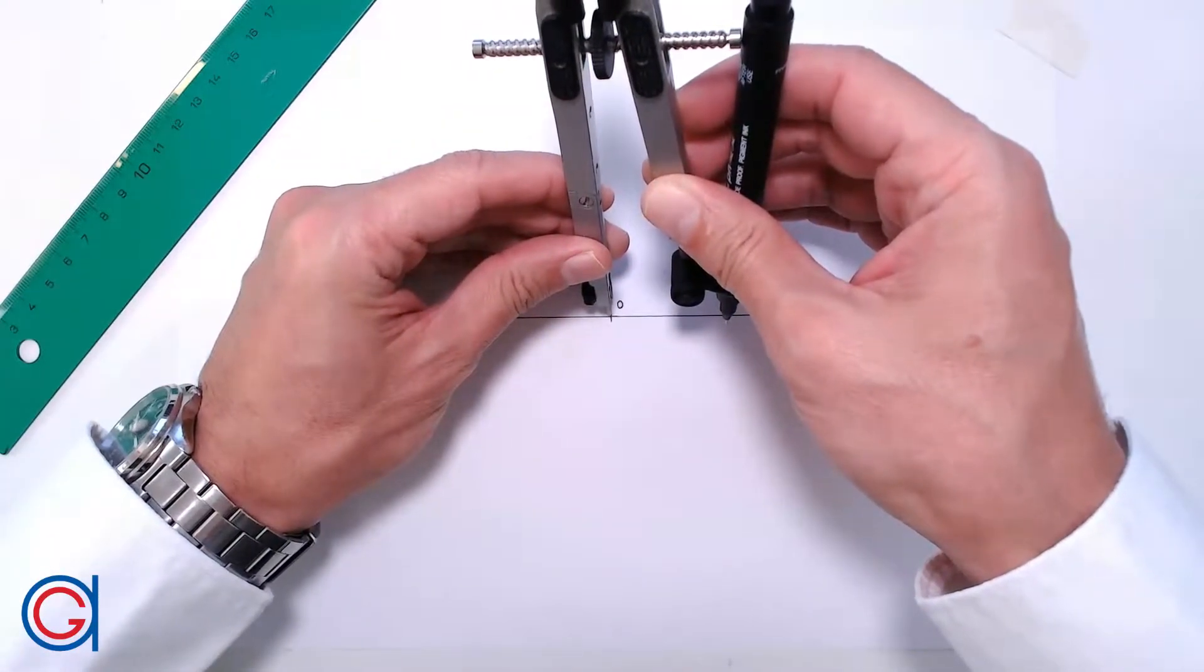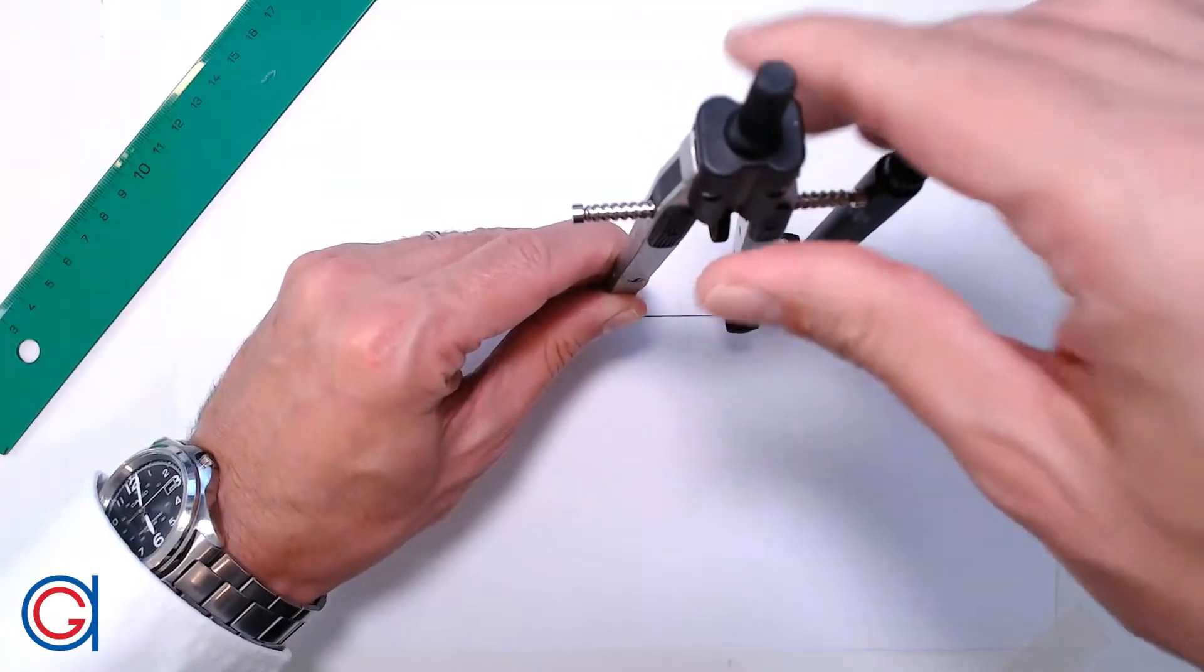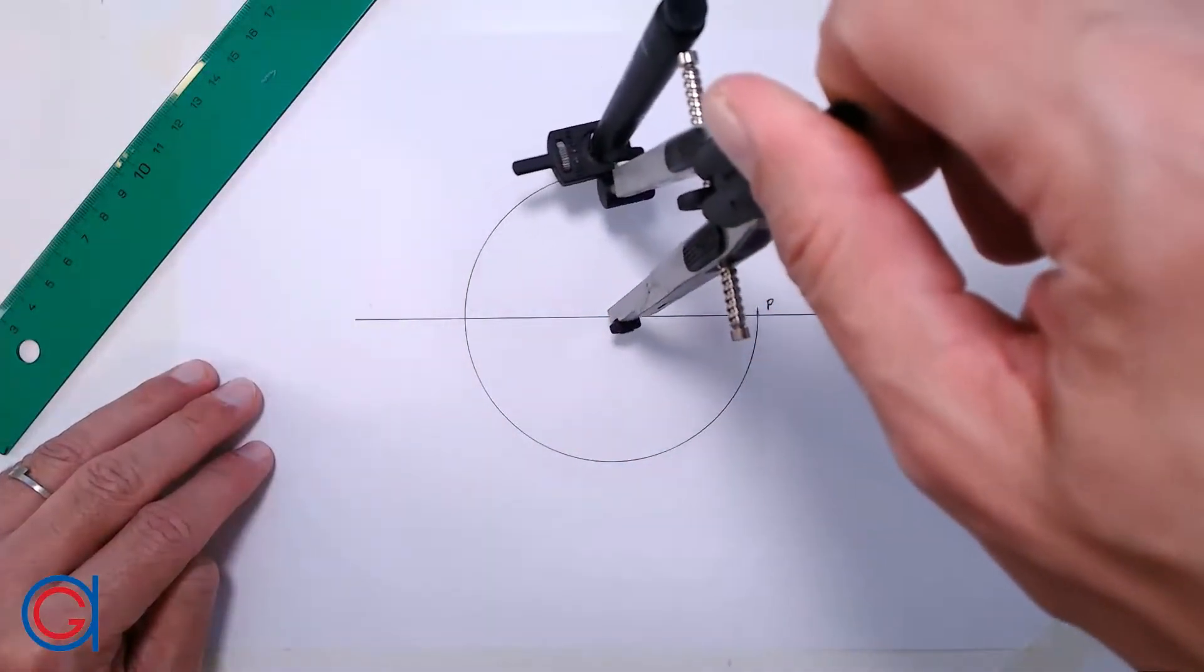So now, we are going to draw the circumference, centering the compass on center point O, and with the radius OP, we draw the circle, as can be seen here.